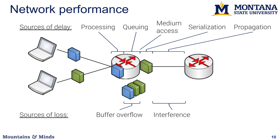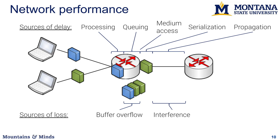Looking at network performance, there are two main concerns: sources of delay and sources of loss. First, a router gets a packet and must do processing — looking at its header to decide where to forward it. Then it places the packet on an outgoing link buffer where packets from different flows queue up. A packet at the front of the queue must wait to access the medium, for example in wireless.